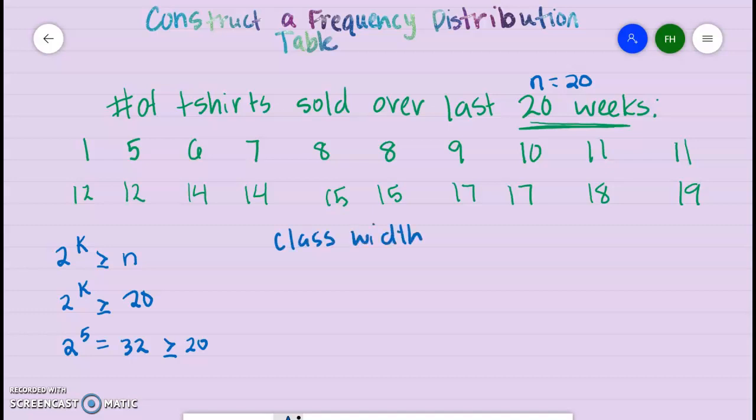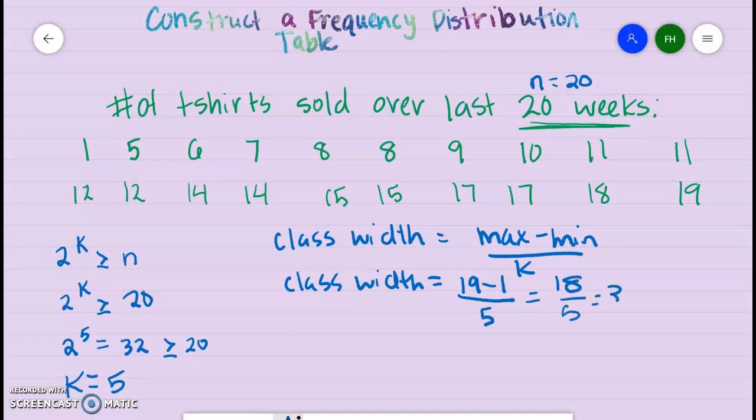The way that you determine the class width is you take your maximum value minus your minimum divided by k. We just determined that k is 5. Luckily these are in order, so it's easy to calculate. Your maximum value is 19, your minimum value is 1, and divide that by 5.